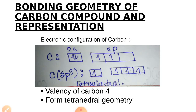First of all, for carbon compounds, let's look at the bonding geometry and its representation. In a carbon compound, carbon has two electrons on 2p and two electrons in 2s. So in sp3 hybridization, it can form bonds with 4 atoms, so the valency of carbon is 4, and carbon forms a tetrahedral geometry.